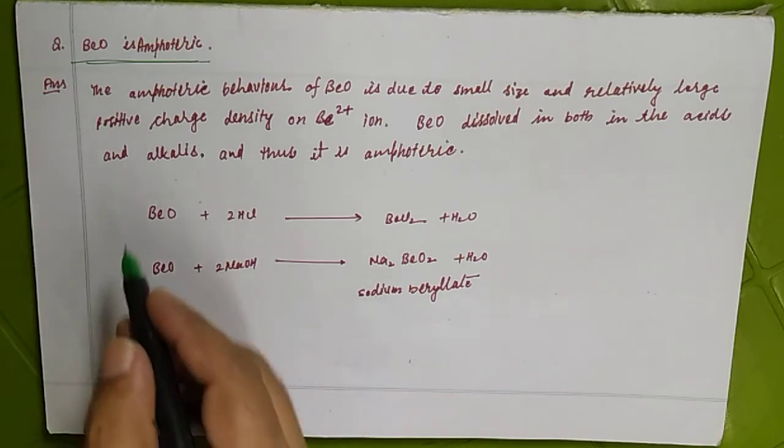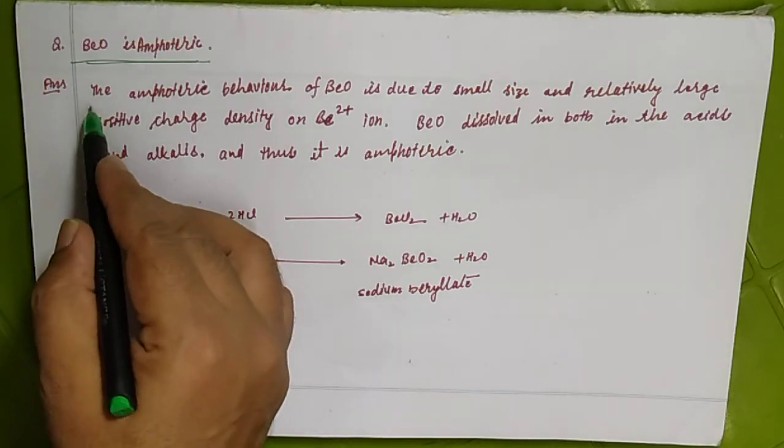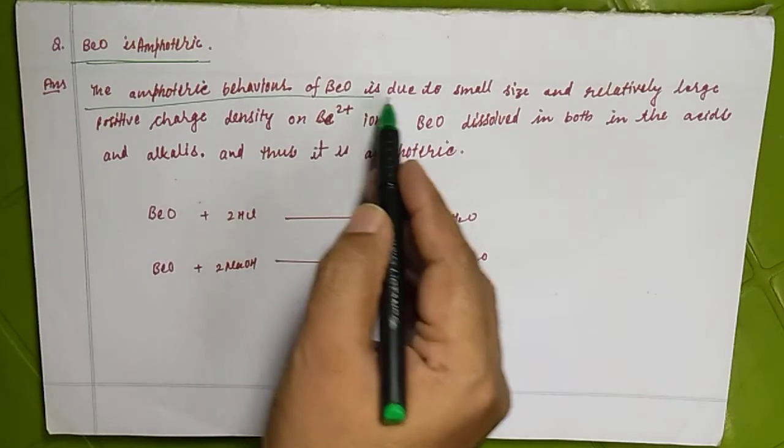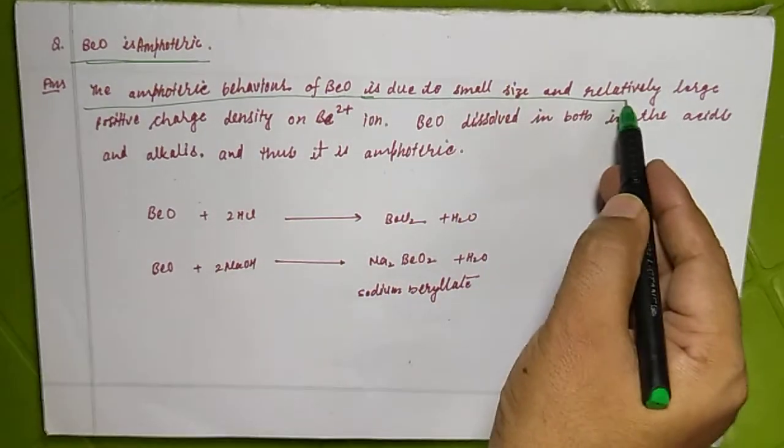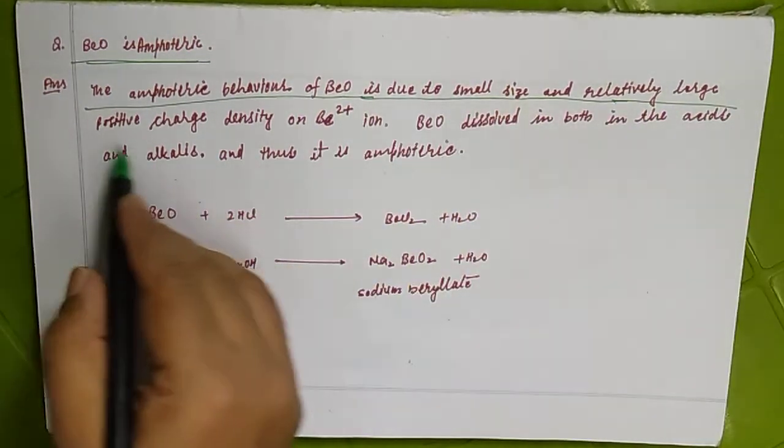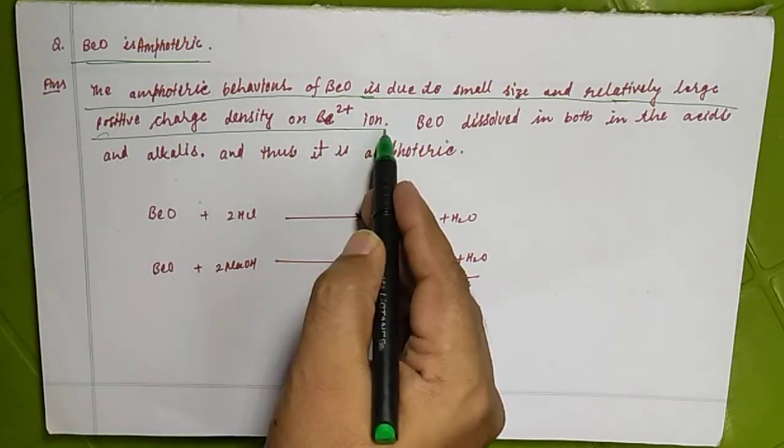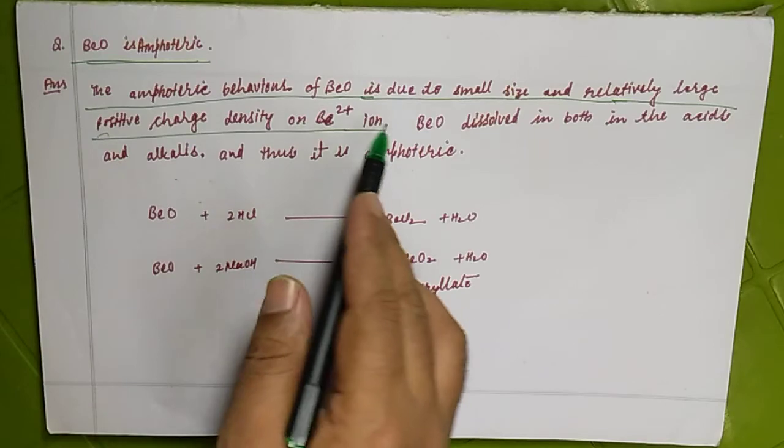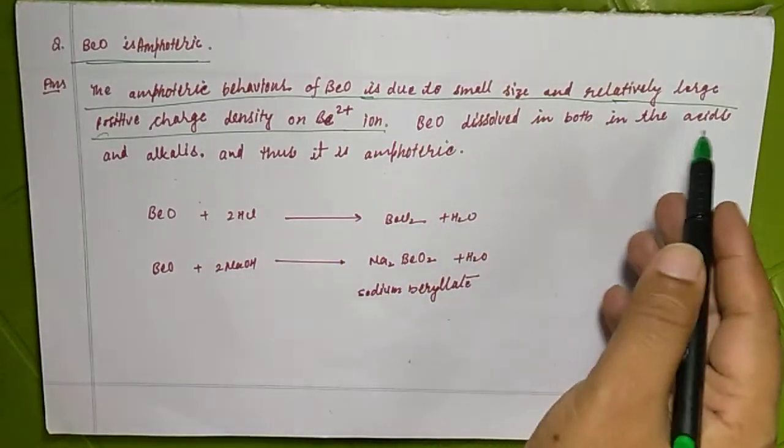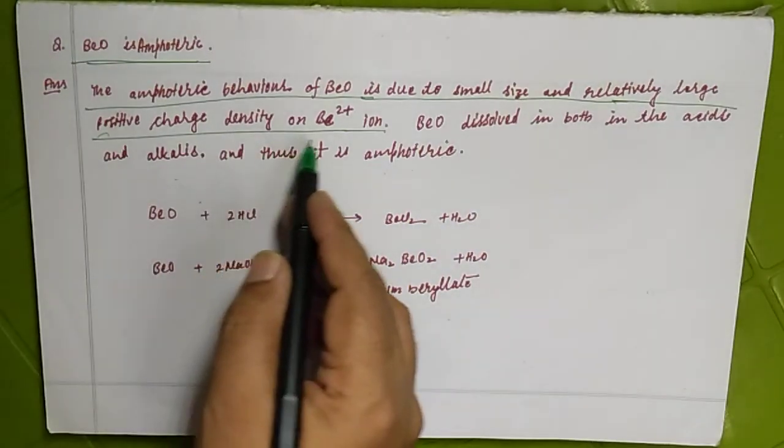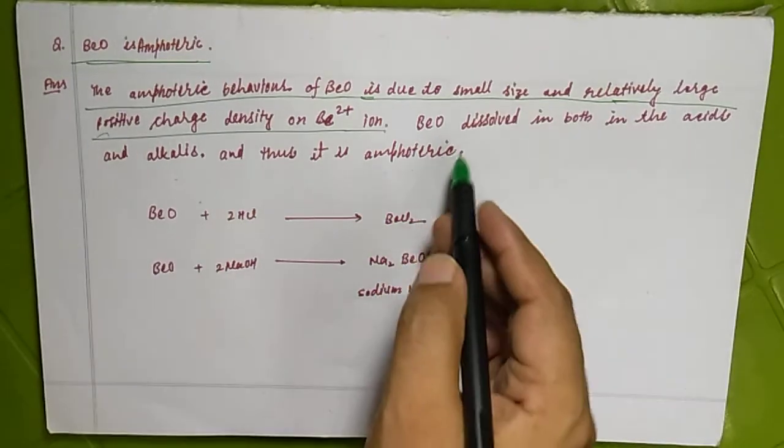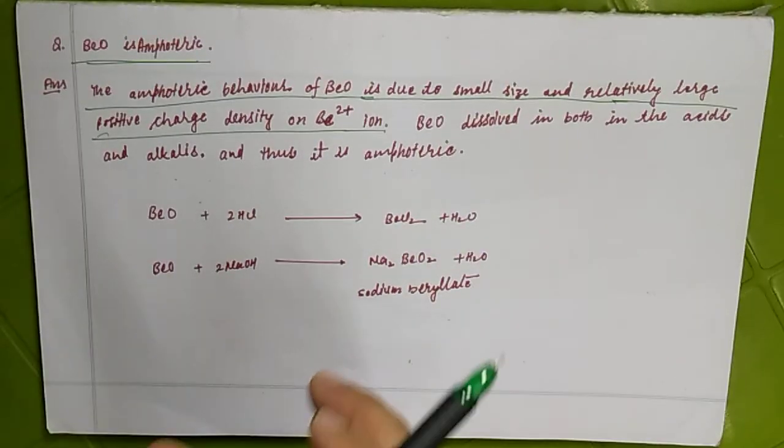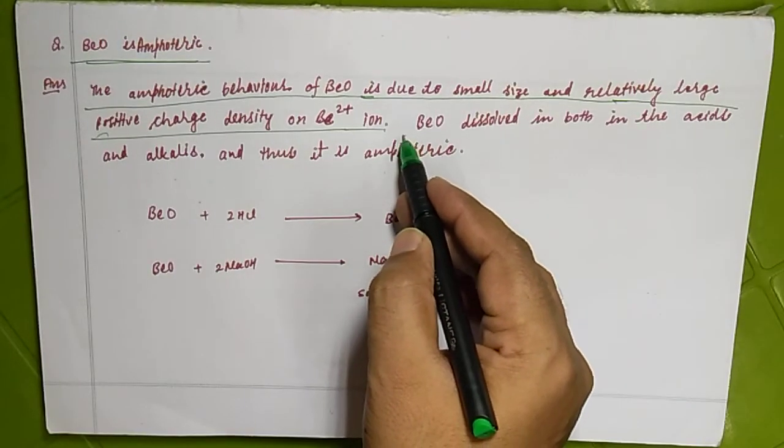Beryllium oxide is amphoteric. The amphoteric behavior of beryllium oxide is due to small size and relatively large positive charge density on the beryllium ion. The amphoteric behavior of BeO is due to small size and relatively large positive charge density on the beryllium ion.